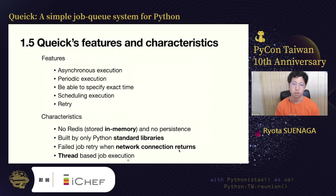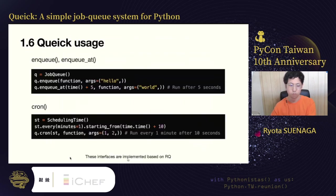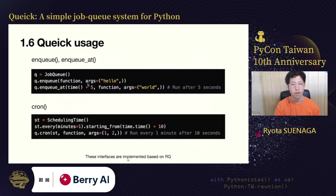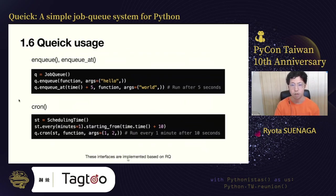The third characteristic is failed job retry when the network is available. This feature makes Qwik work in an unstable environment. Finally, each job is executed on a thread. Qwik has three methods: enqueue, enqueueAt, and Qwik. Qwik executes a job function by the enqueue method, and by the enqueueAt method, a function can be executed at a specified time.